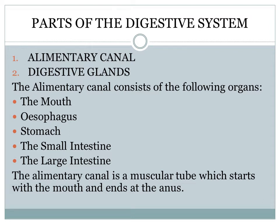The digestive system consists of the alimentary canal and the digestive glands. The alimentary canal consists of the following organs: the mouth, esophagus, stomach, the small intestine, and the large intestine. The alimentary canal is a muscular tube which starts with the mouth and ends at the anus. It is about 9 meters long and is highly coiled in certain regions, especially in the small intestine. The digestive glands that we will study are salivary glands, liver, and the pancreas.